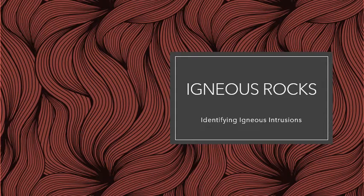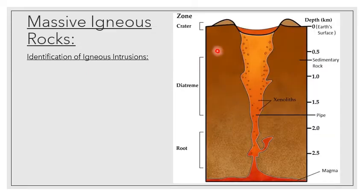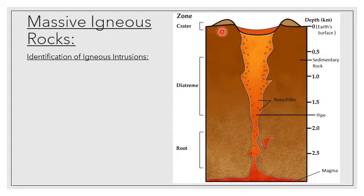Let's look at the different types of igneous intrusions in our system. In this picture, our dike feeds our volcano and it flows out into a volcanic pipe. Taking a closer look at a volcanic pipe — this is what it looks like. It has a big carrot-shaped format, with different zones. At the very top is a volcano crater or crater zone, where the magma flows out as lava onto the surface of the earth.